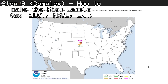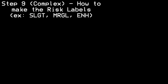For step 9, this is the most complex step of the entire tutorial, so I will try to explain this as best as possible. This step involves making the labels for the risks. To make this step easier, I also provided a reference template of all of the risk labels that you will need to save to your computer. This step involves the use of the rectangle select tool.